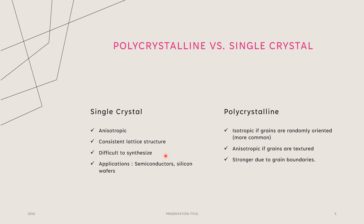Polycrystalline materials are commonly isotropic if the grains are randomly oriented, which is the majority of the time. They are anisotropic if the grains are textured, which we will get into later in this presentation. Polycrystalline materials are also stronger due to those grain boundaries, because the inconsistent lattice structure makes for a stronger material.